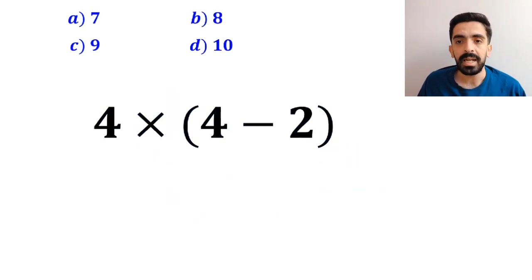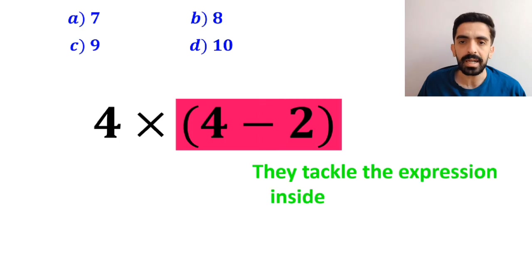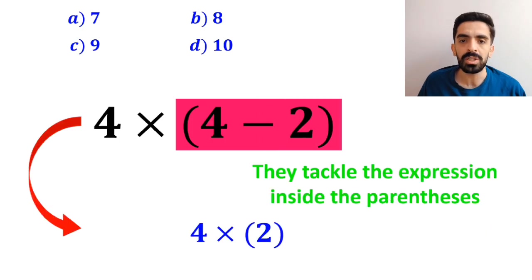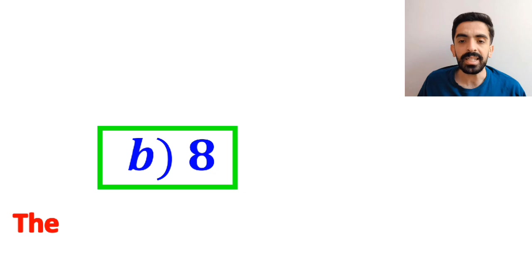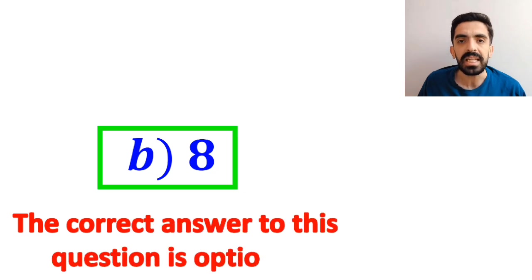In the final step, they tackle the expression inside the parenthesis and write it as 4 times 2, which ultimately gives them the answer 8. Then, without any hesitation, they quickly say that the correct answer to this question is option B.